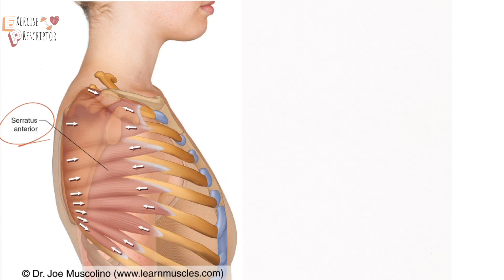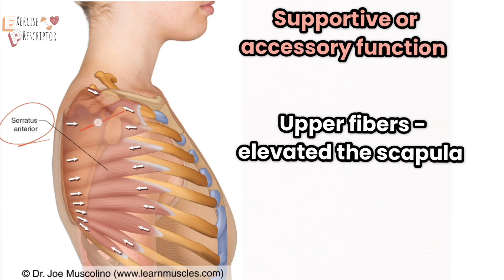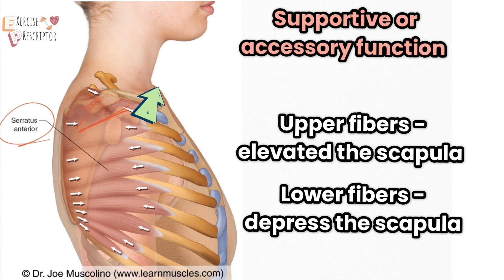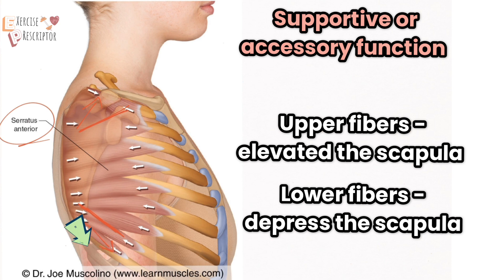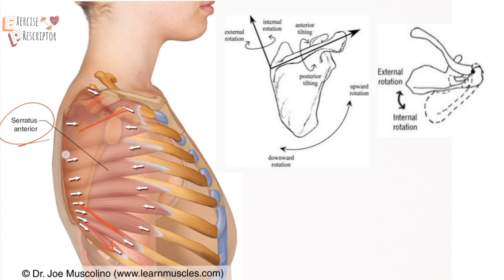The upper fibers are situated in a slight oblique manner, so when they contract, they help to elevate the scapula. The lower fibers run in an oblique manner in a downward direction, so when the lower fibers contract, they help to depress the scapula.